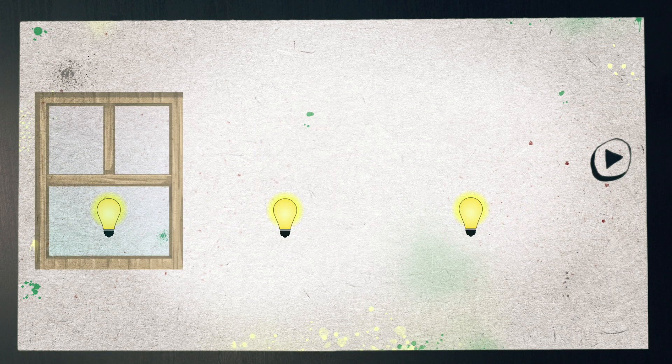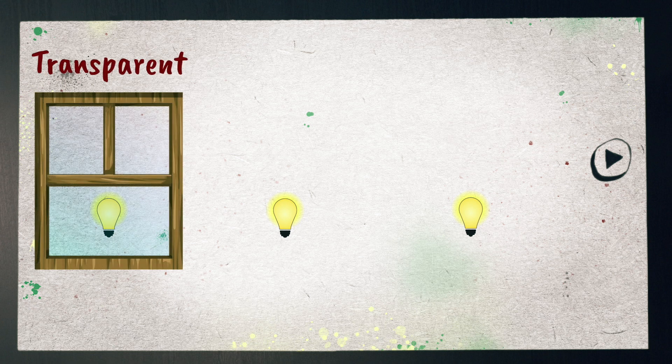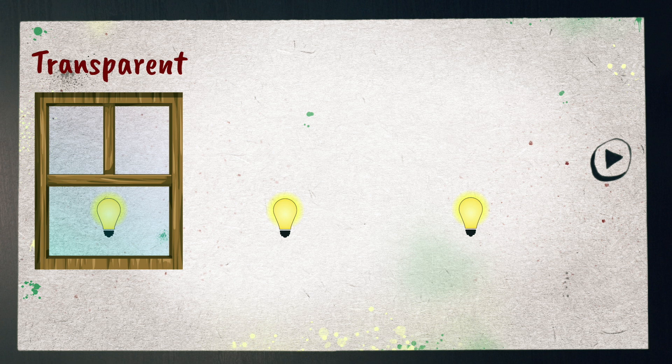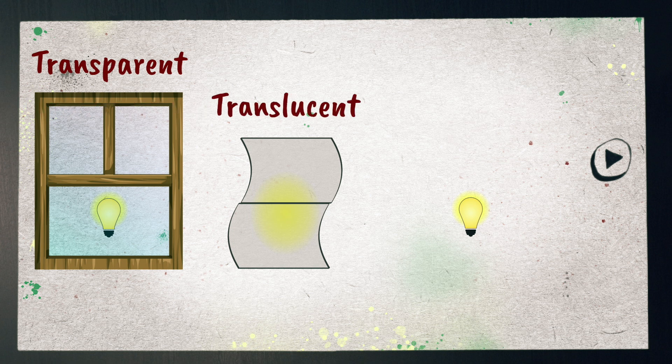Some objects, like clear glass, are transparent, which means they transmit light very well. Other objects, like tissue paper, transmit some light but scatter it so we only see a blurred image. Tissue paper is not transparent, but translucent.